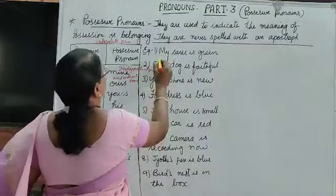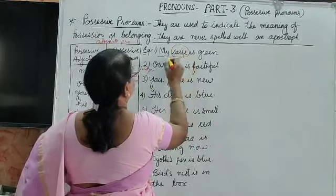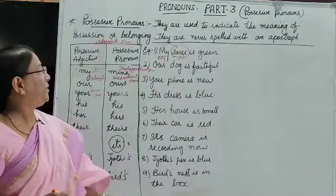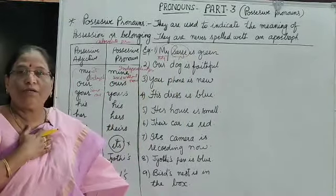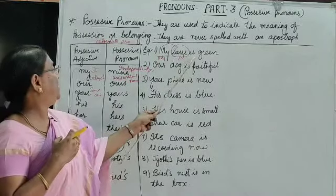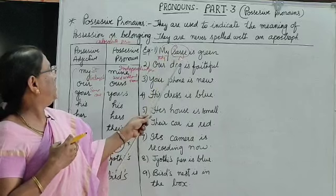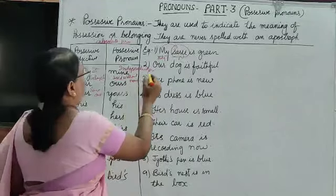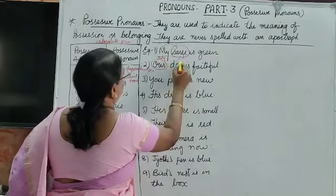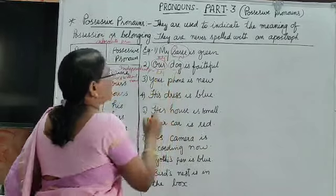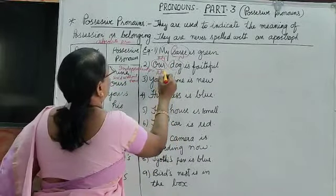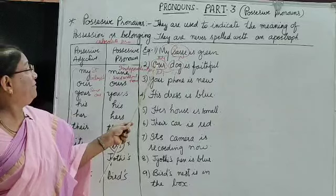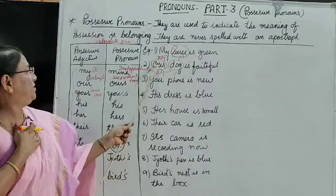For example: 'My sari is green' — here 'my' is a possessive adjective and 'sari' is the noun, because 'my' shows whose sari it is. 'Our dog is faithful' — 'our' is the adjective and 'dog' is the noun. 'Your phone is new' — 'your' is the adjective and 'phone' is the noun. 'His dress is blue' — 'his' is the adjective and 'dress' is the noun.